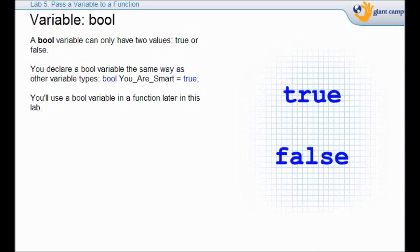So we're going to declare a bool value, and this one they show you an example how you declare bool, you are smart, is equal to true. It could be true or false, right? So we're going to use bool in here.